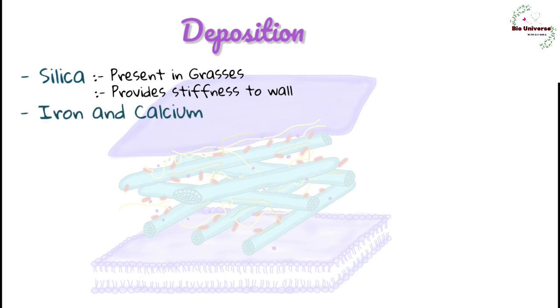Iron and calcium, they are two common cell wall depositions, especially in aquatic habitats, example Chara.